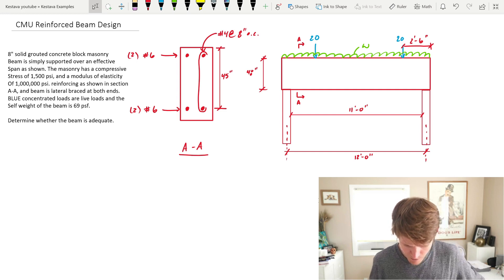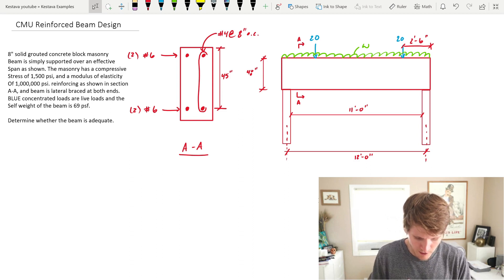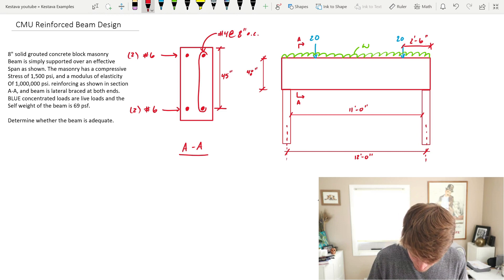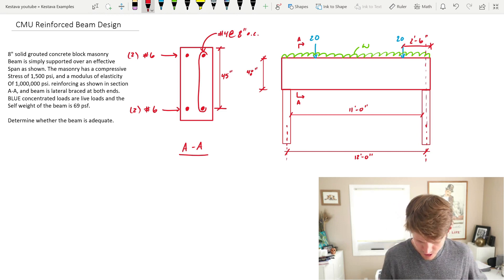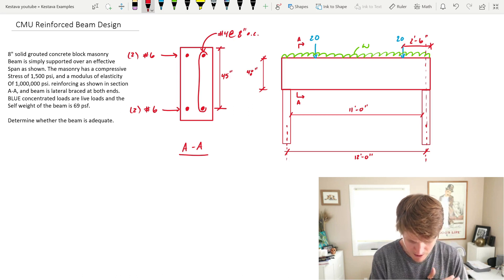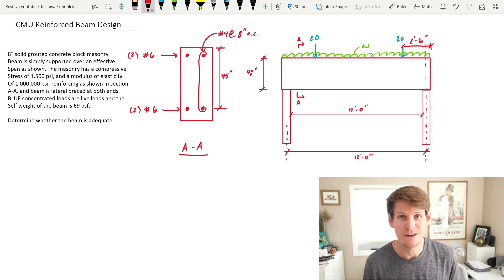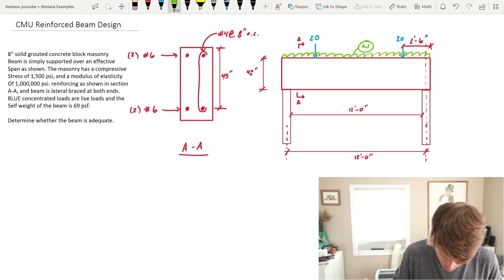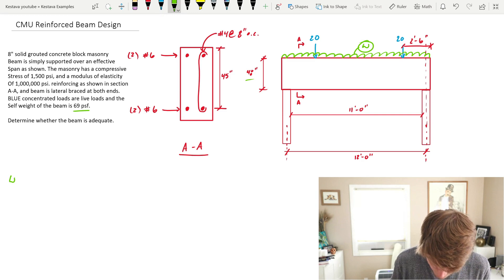Alright, so CMU reinforced beam design. We have a simply supported beam that you can see there. Simple elevation view. I have the self-weight of the beam denoted in green that we need to calculate. And then we have two point loads that are two and a half feet from the edge of the beam. That's actually going to be down to the centerline of the support, and that's the same on both sides. You have a little AA cross section right there showing all the rebar in it. And basically, we have our design CMU properties over to the left. And we just need to determine, hey, is this beam adequate under the loading provided? So let's figure that out. Well first of all, let's determine what W is, the self-weight of the beam. We see right here, 69 PSF for the self-weight of the beam. Beam's 48 inches deep. W is going to equal 276 PLF.